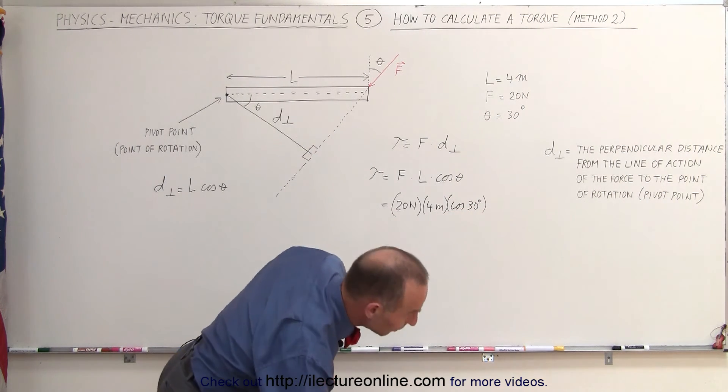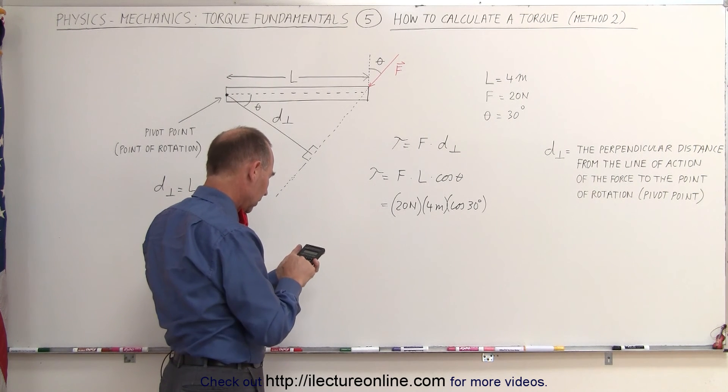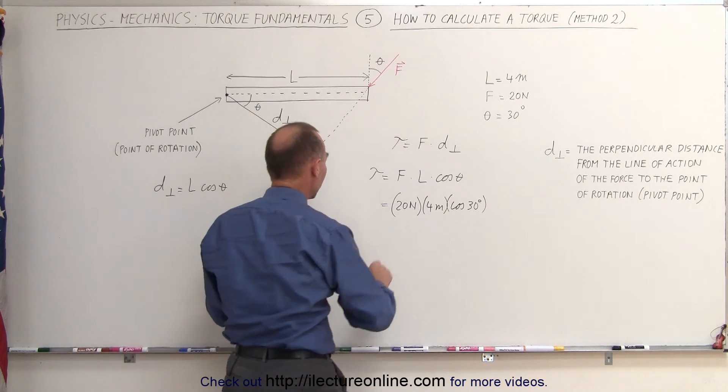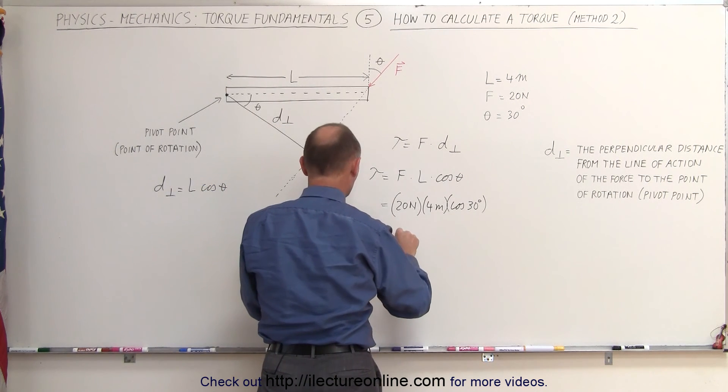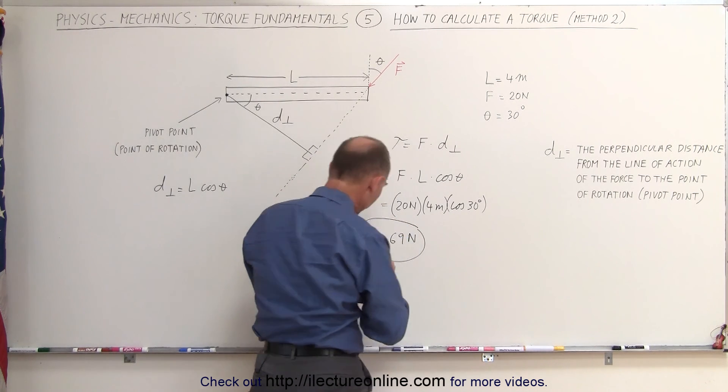And with the calculator again, that would be 20 times 4 times 0.866 equals, and that gives us a torque equal to, round it off, to 69 Newtons. Same result as we got before.